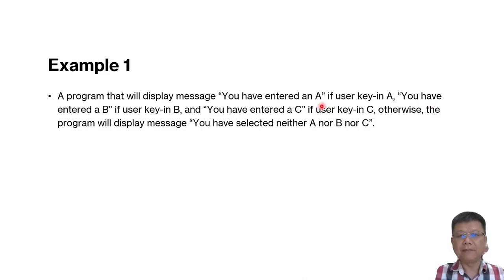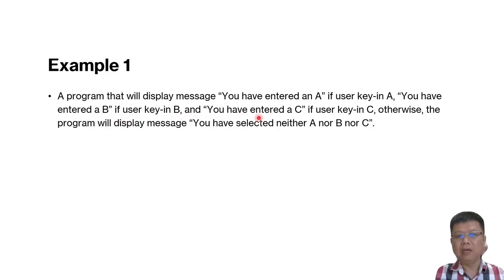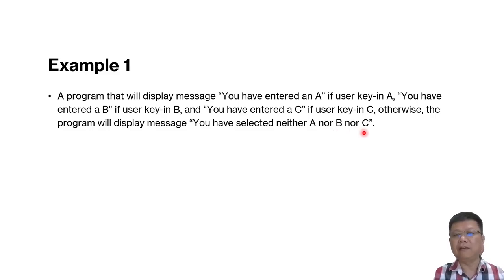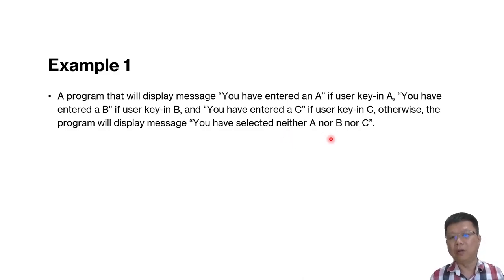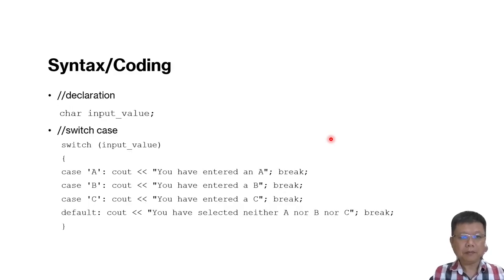For example, let's say a program that will display the message 'you have entered an A' if the user keys in A, 'you have entered B' if the user keys in B, 'you have entered C' if the user keys in C, otherwise the program will display 'you have selected neither A nor B nor C'. This is a clear case where the user may key in A, B, or C.